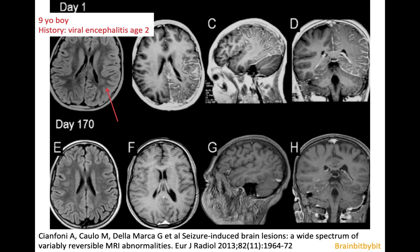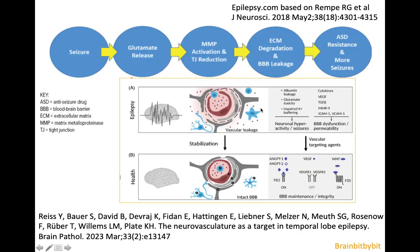Sometimes you can see leptomeningeal enhancement in the post-ictal phase, related to problems with the blood-brain barrier. This is illustrated by the case of a nine-year-old boy who had viral encephalitis at age two. On imaging there was only residual gliosis in the periventricular region, and clinically he had post-encephalitis epilepsy. After a seizure, MRI showed extensive leptomeningeal enhancement, which disappeared half a year later. This enhancement is related to glutamate release, which influences the tight junctions between endothelial cells, causing leakage of the blood-brain barrier.